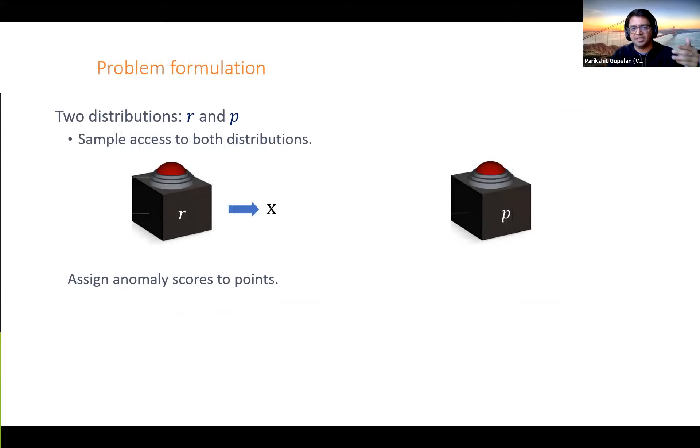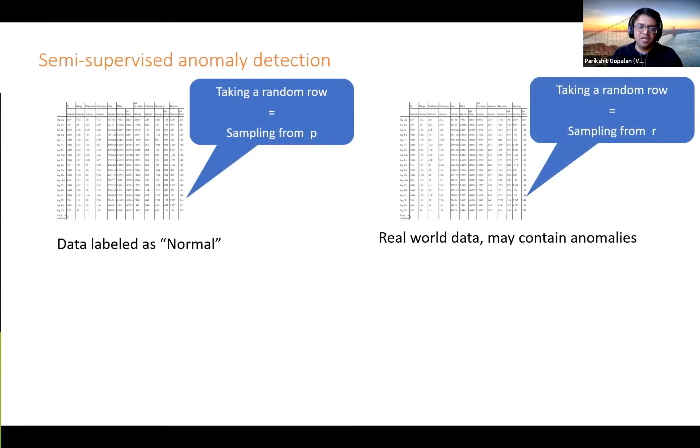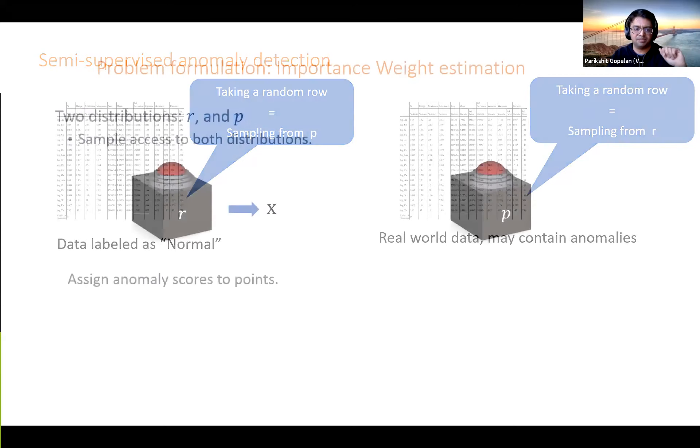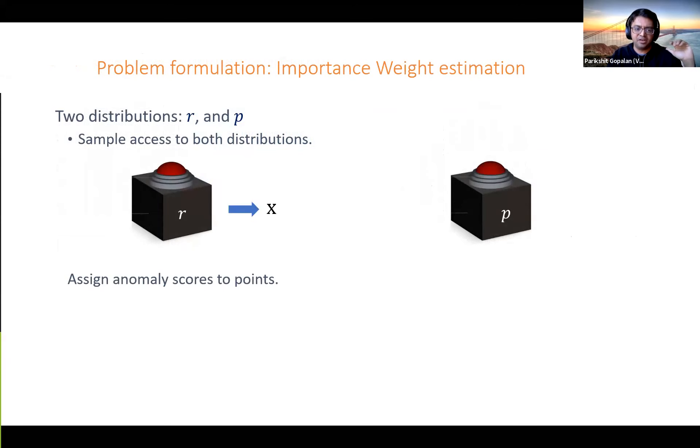How do we formulate this as a mathematical problem? There are two distributions, R and P, which indicate the real world versus our prior expectations. We only have sample access to both distributions - press a button, you get a sample from whichever distribution you like. Based on this, we're trying to assign anomaly scores to every point. The normal points are just the prior distribution, and the real world examples are samples from the other real world distribution.